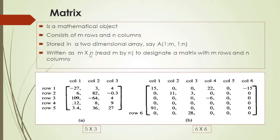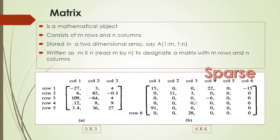Let's talk about m rows and n columns with an example. This is one example of a matrix — 5 rows and 3 columns. This is another matrix with 6 rows and 6 columns. Let's talk about these two matrices and all their data.